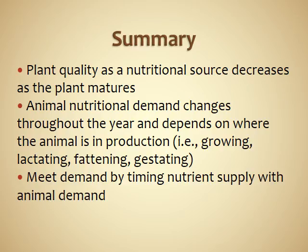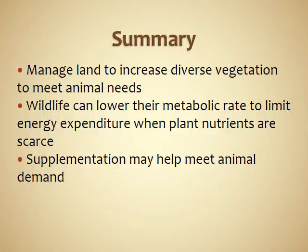In summary, plant quality as a nutritional source decreases as the plant matures, and animal nutritional demands change throughout the year depending on production stage — whether the animal is growing, lactating, fattening, or gestating. You need to meet demand by timing nutrient supply with animal demand, knowing what forage is available on the range and what your animal requires. Manage land to increase diverse vegetation to meet animal needs, having different plants scattered throughout the landscape to help animals meet their demand.